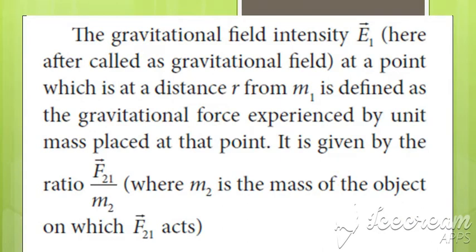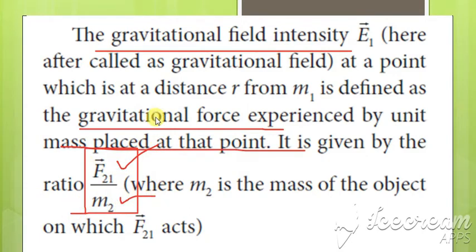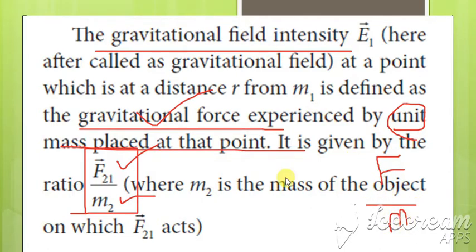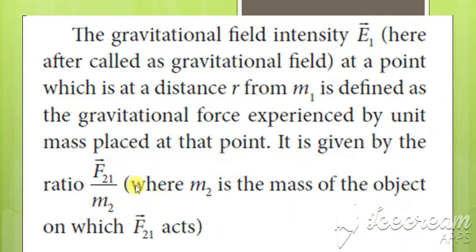Now, the gravitational field intensity is defined as the gravitational force per unit mass, which is F divided by M. It is denoted by the letter E. So, gravitational field intensity E at a point at a distance R from mass M1 is defined as gravitational force per unit mass, given by F₂₁ divided by M2.